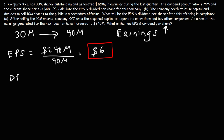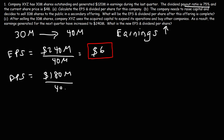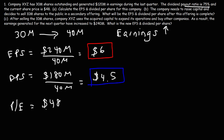Now let's calculate the DPS. Assuming the same dividend payout ratio of 75%, the total dividends paid will increase from $90 million to $180 million — multiply 240 by 0.75 to get $180 million. So the DPS value increased from $3 in Part A to $4.50 in Part C. And finally, the P/E ratio: $48 divided by the EPS of $6 gives a P/E ratio of 8.